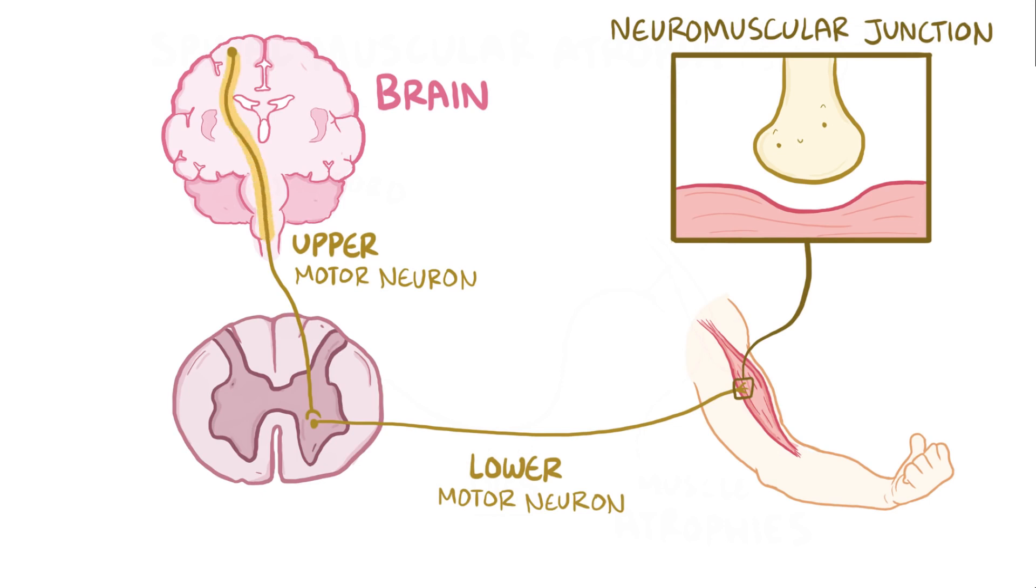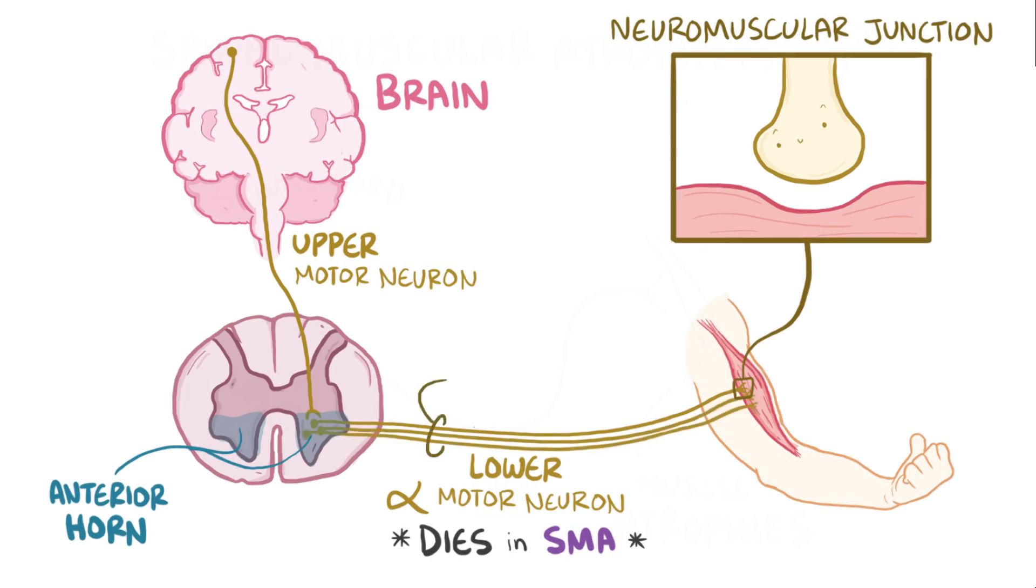The lower motor neurons which cause voluntary contractions of skeletal muscles are called alpha motor neurons, and these alpha motor neurons are the ones that die in SMA. Their cell bodies are found in the anterior horn, or front part of the spinal cord, and their axons project from the spinal cord all the way to the muscles they innervate. A group of these neurons is called a motor nerve.